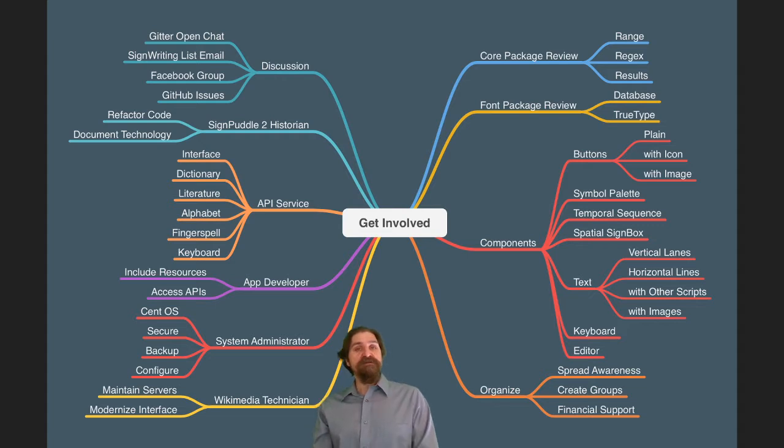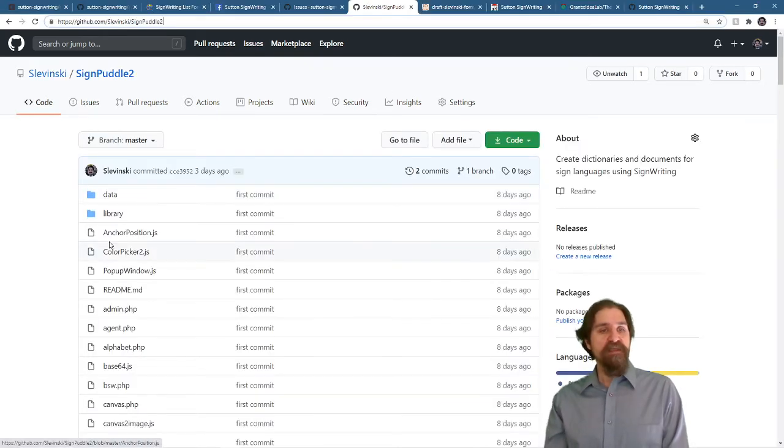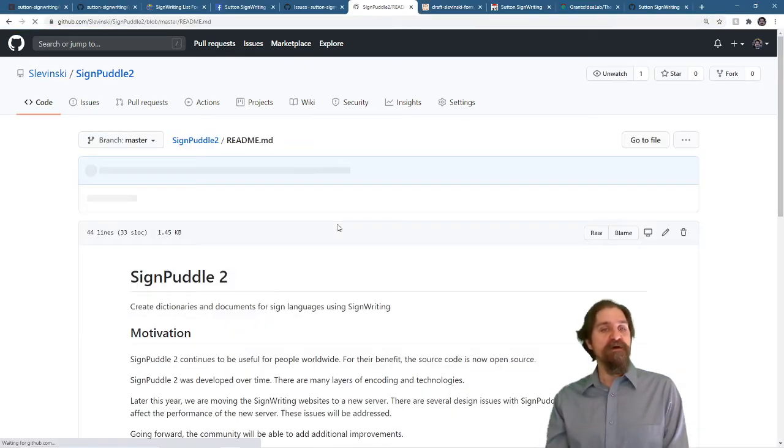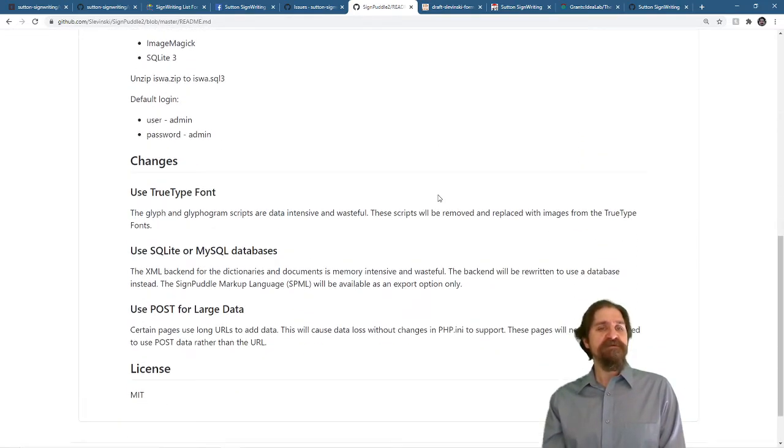After discussion, there is also... You can be a SignPuddle 2 historian. We have open sourced SignPuddle 2. You can find that on GitHub. And we have an extensive README talking about the changes that we're going to be making. This is mostly written in PHP, and it is available for modification.